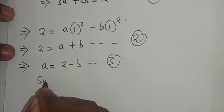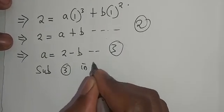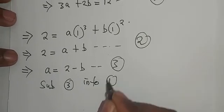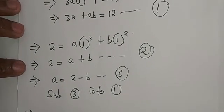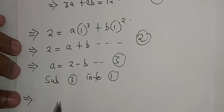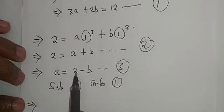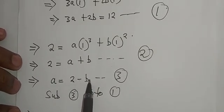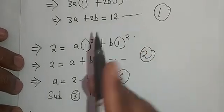Then all we must do is substitute equation 3 into equation 1. Which implies that where there is a we substitute 2 minus b in equation 1.